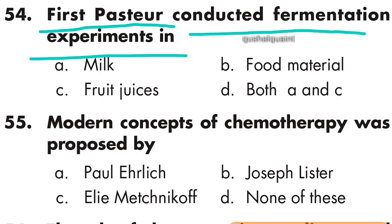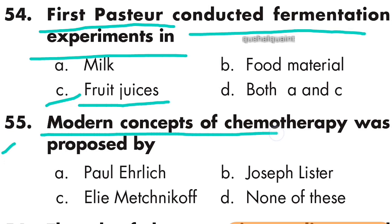Question number 54: Pasteur first conducted a fermentation experiment in fruit juice. Option C is right — fruit juice. Question number 55: The modern concept of chemotherapy was proposed by Paul Ehrlich. Option A is right — Paul Ehrlich.